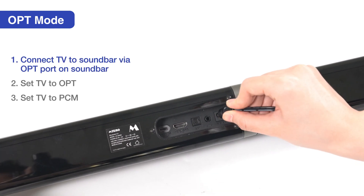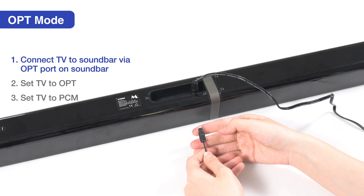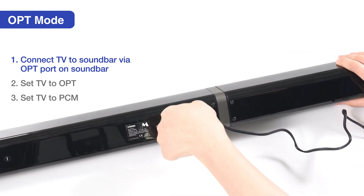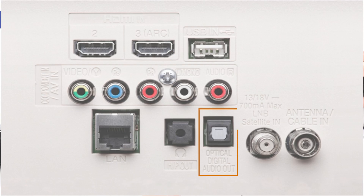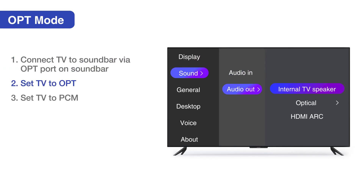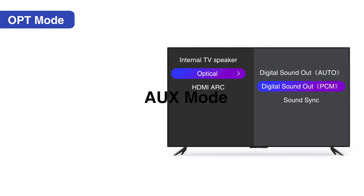Optical mode. Remove the plastic cap on both ends of the optical cable. Insert one end of the cable into the optical port on the back of the soundbar. Next, insert the other end into your TV's optical out port. After connection, go to your TV's sound settings and select optical as your audio output. Then find the digital sound out or digital audio format settings in your TV and select PCM or pass-through.